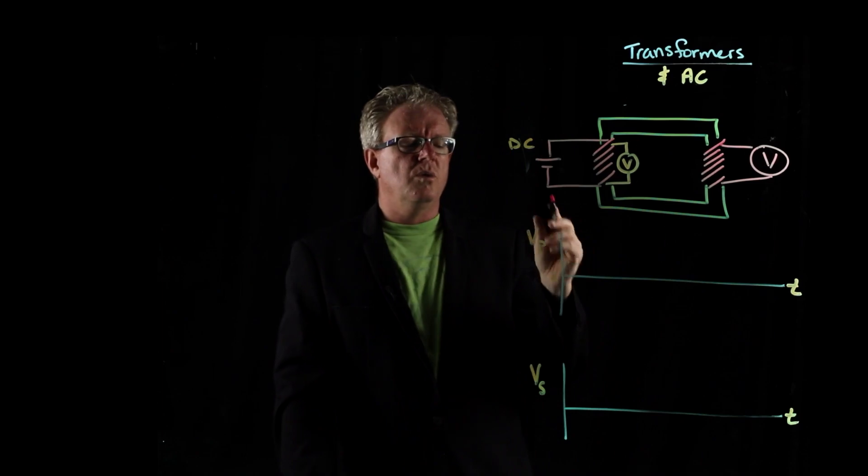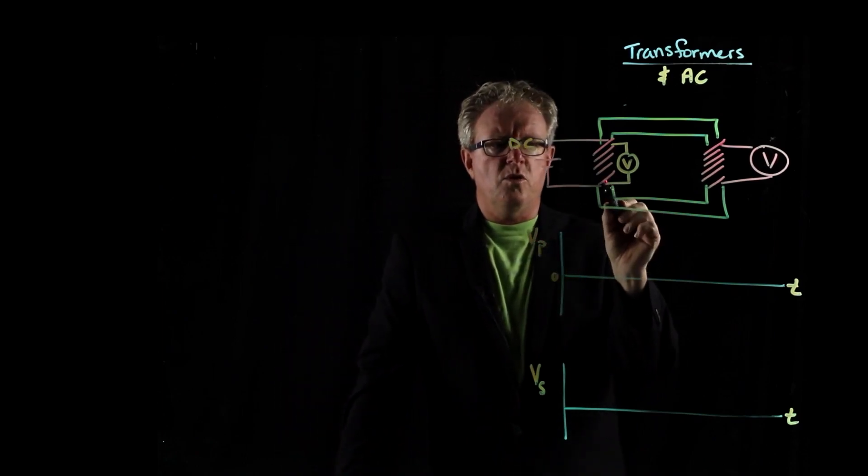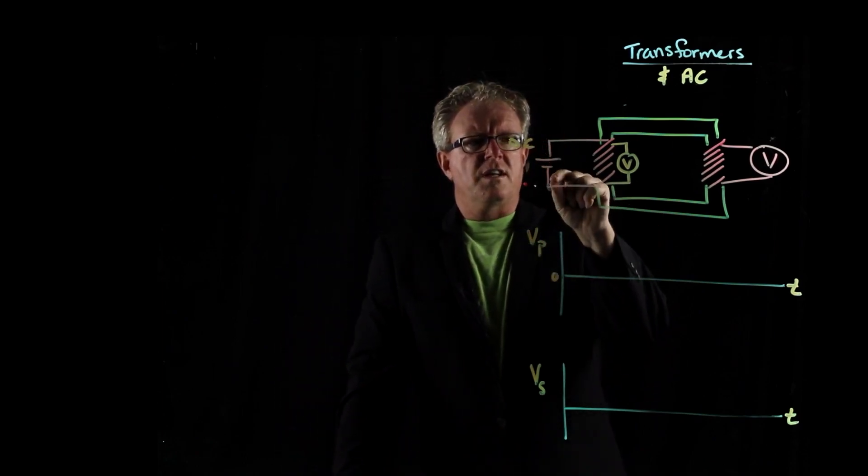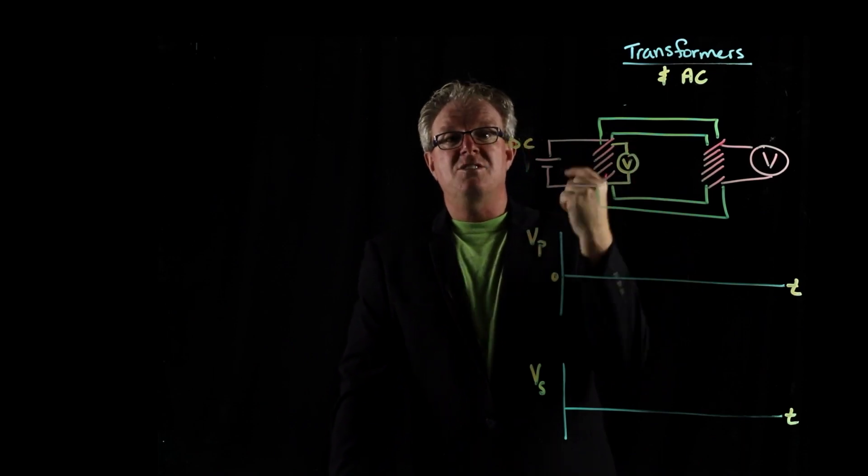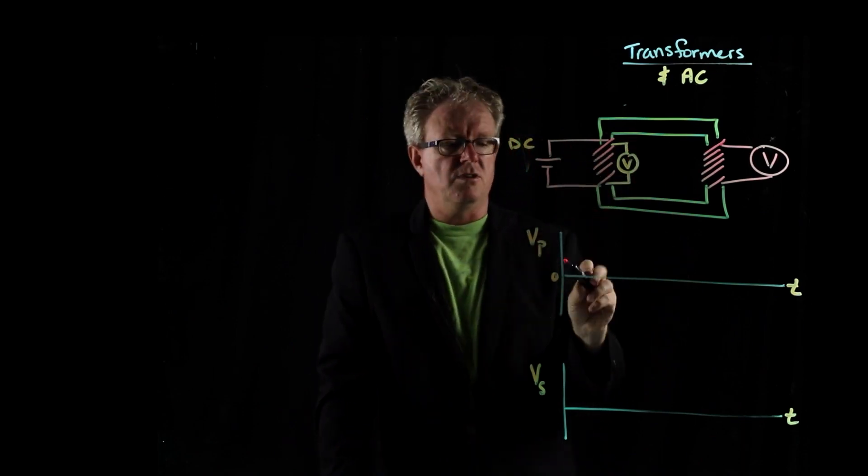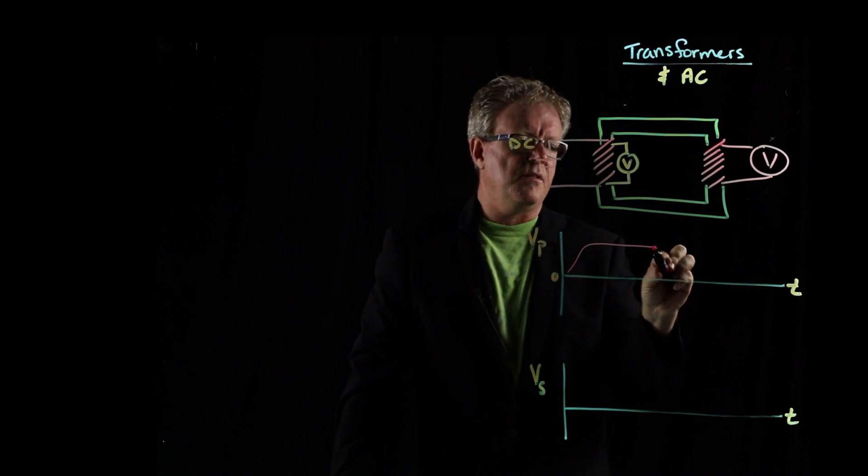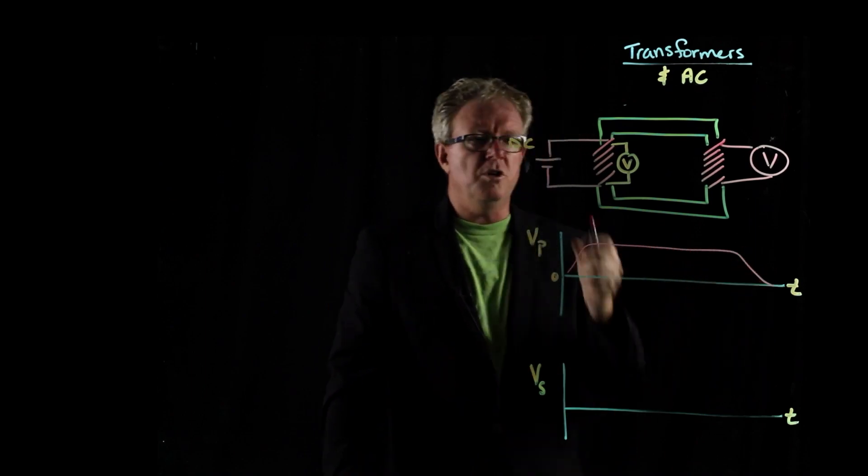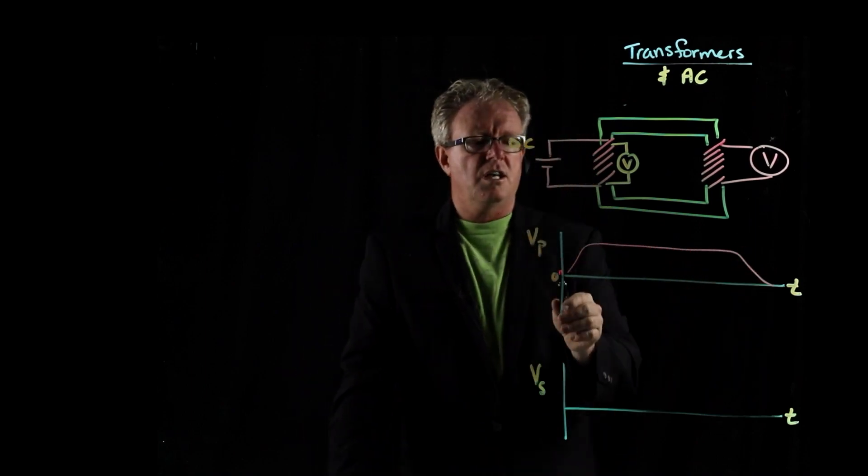So how would it look? Well, the primary coil just here, you turn on the current and the voltmeter is going to read the potential difference between the two terminals of the battery. And so it's going to go up like that and then down when you disconnect it, right? So you connect it.